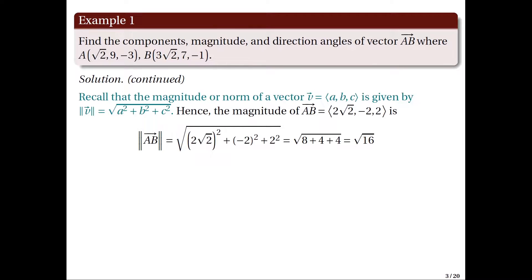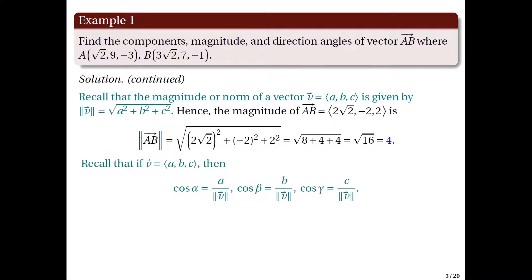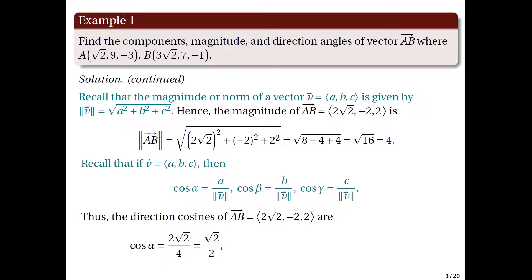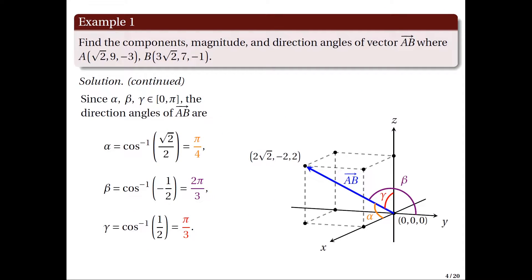Using this formula, we find that the magnitude of vector AB is equal to the square root of 16, which is 4. Now we find the direction angles α, β, and γ using the direction cosines. Following the given formula, cos α = 2√2/4 = √2/2, cos β = −1/2, and cos γ = 1/2. Using inverse trigonometric functions, α = π/4, β = 2π/3, and γ = π/3.